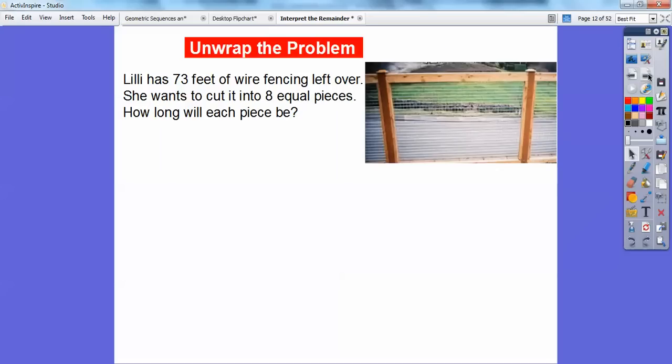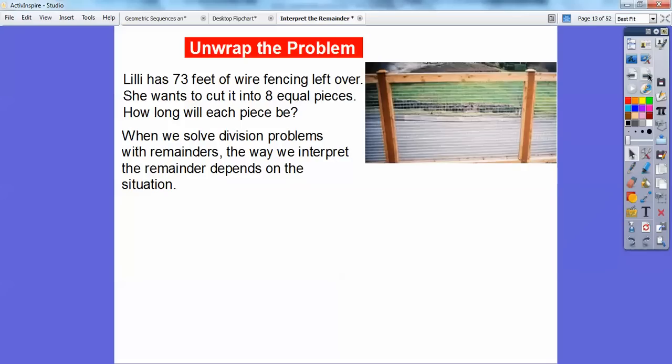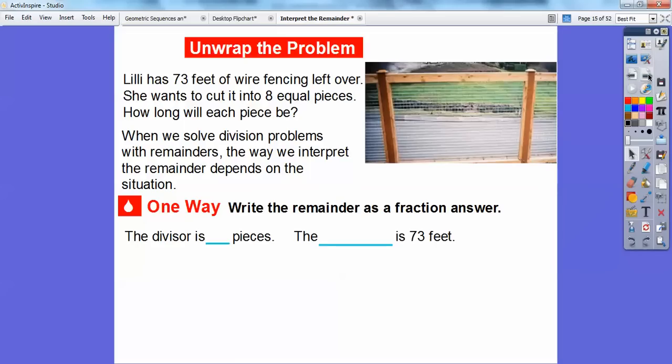We'll talk about the remainder in three different scenarios here. So here's one. Lily has 73 feet of wire fencing left over. She wants to cut that 73 feet into eight equal pieces. So how long will each piece be? When we solve division problems with remainders, the way we interpret the remainder depends on the situation. So I'll give us three different situations here. One way is to write the remainder as a fraction answer, a fraction, it's called a mixed number.